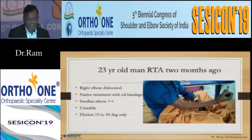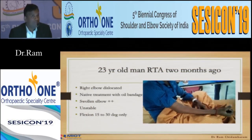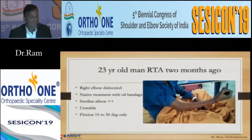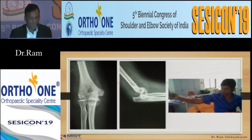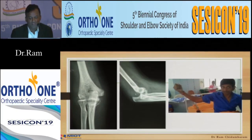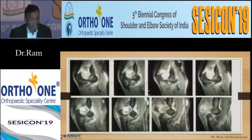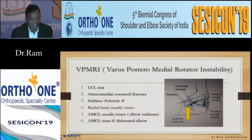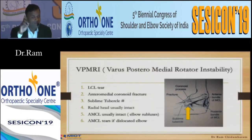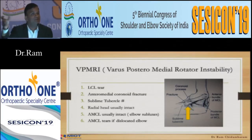The third spectrum: a 23-year-old man after a road traffic accident two months ago. The right elbow was dislocated and he had native treatment. He presents with a swollen, painful elbow stuck in a fixed position. He has a coronoid fracture with dislocation and early heterotopic ossification, and a very limited range of movement. On MRI there is damage everywhere, but note that the radial head is intact. With a coronoid fracture with dislocation and an intact radial head, this is a different pattern of injury: varus posteromedial rotatory instability. The lateral collateral ligament is torn; the elbow pivots against the anteromedial facet of the coronoid, breaking it. The radial head is then free to rotate, causing further damage and dislocation.